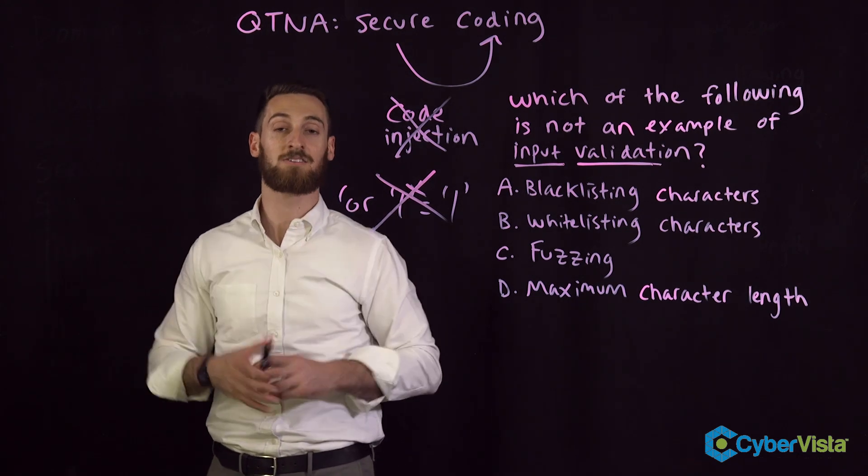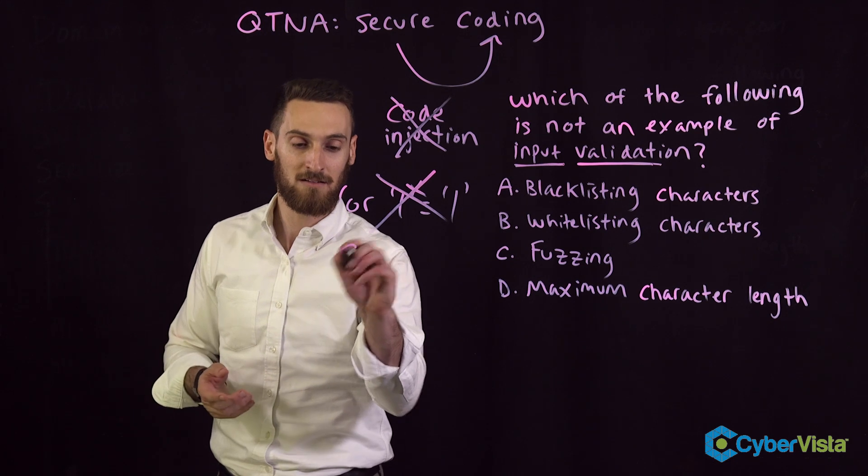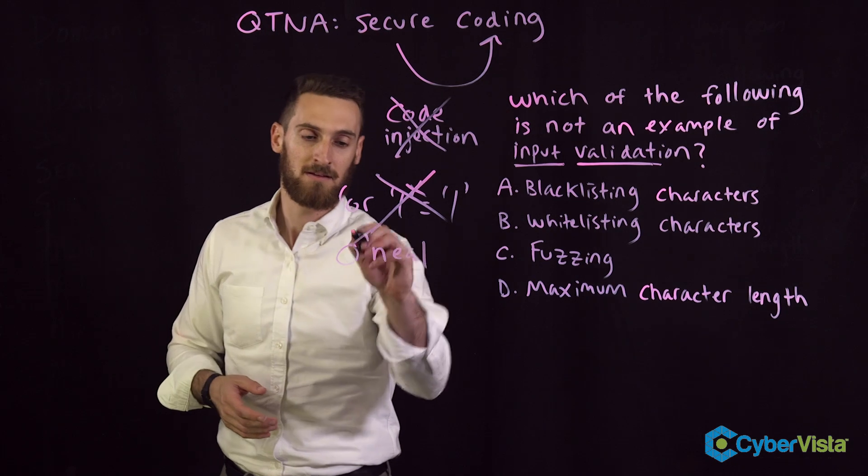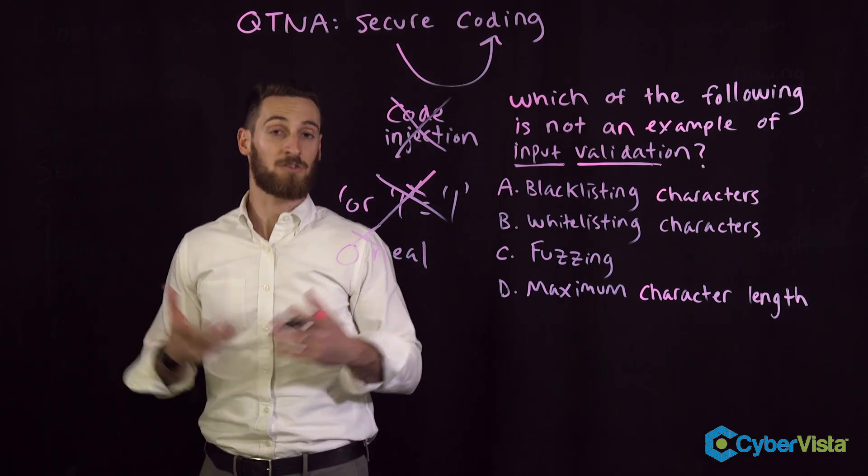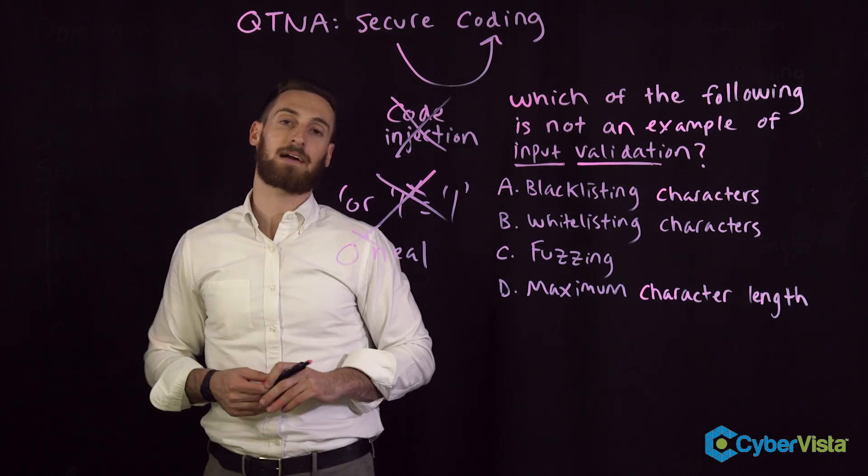We're going to produce an error message or drop the apostrophe. For example, if your name is O'Neill, guess what? The apostrophe gets dropped and you have to apologize to all of your Irish ancestors. So that's it, there's the answer right there: blacklisting.